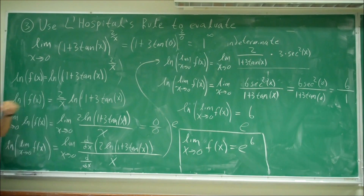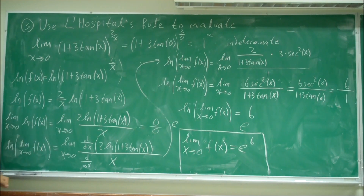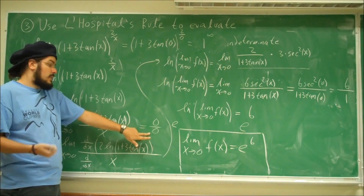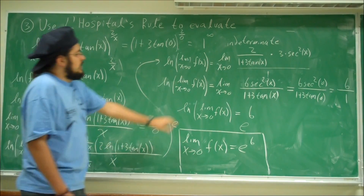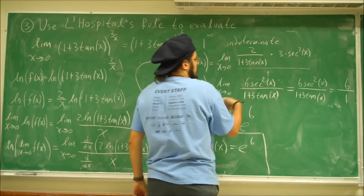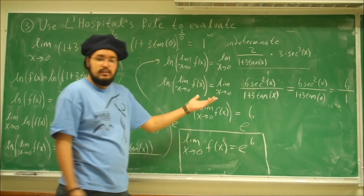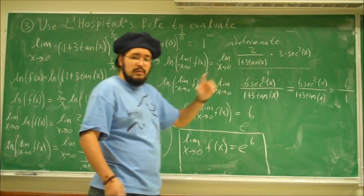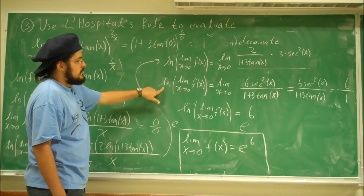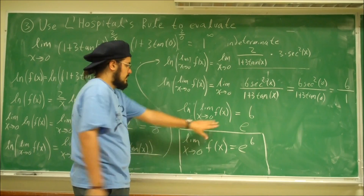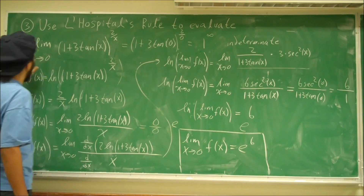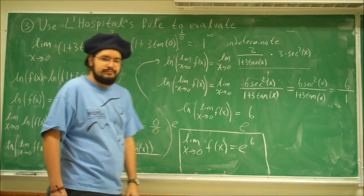Once we have ln f(x) = (2/x) ln(1 + 3 tan x), we take the limit of both sides. Plugging in 0 gives 0 over 0, so we apply L'Hôpital's rule: take the derivative of the top and the derivative of the bottom. After simplification we get 6 sec²x over (1 + 3 tan x). Plugging in 0 gives 6. But 6 is ln of the limit, not the limit itself, so we exponentiate both sides: e to the ln gives us the limit of f(x), and that equals e to the 6.